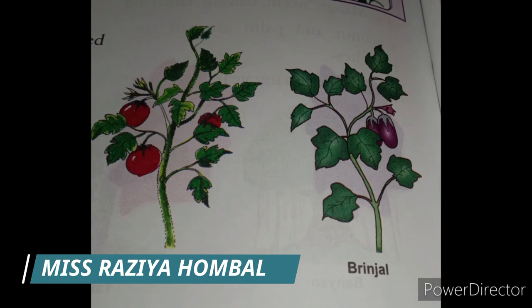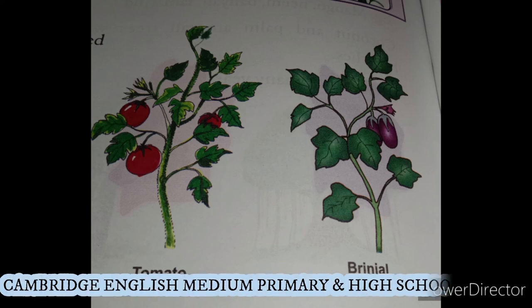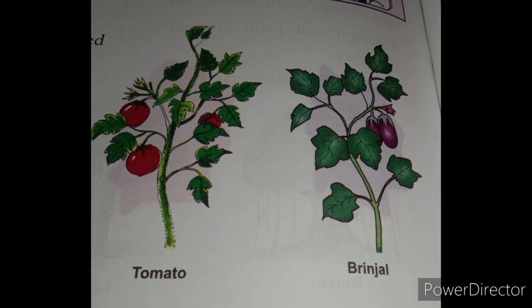Herbs — very small plants are called herbs. They are smaller than shrubs. Herbs have thin, soft, and weak stems. They are seasonal — vegetable plants and flowering plants. Herbs live for a short time; they live for one season only.